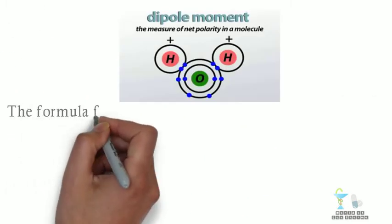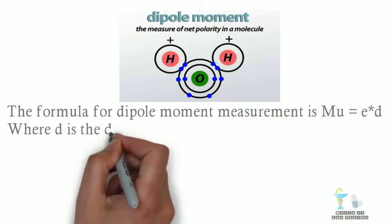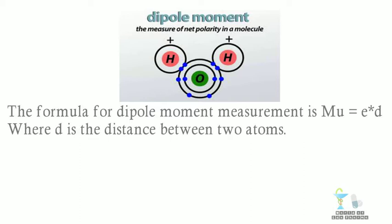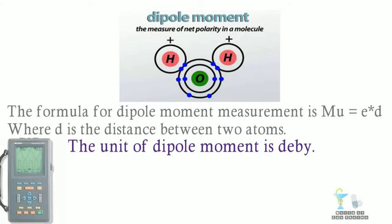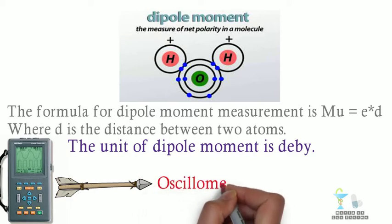The formula for dipole moment measurement is mu equal to E multiplied by D, where D is the distance between two atoms. The unit of dipole moment is Debye. The dipole moment of a molecule can be determined by using an instrument known as oscillometer.